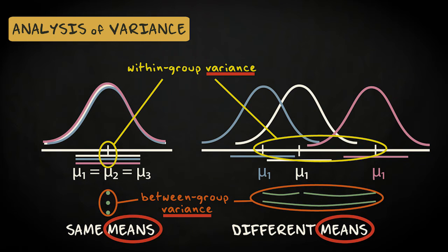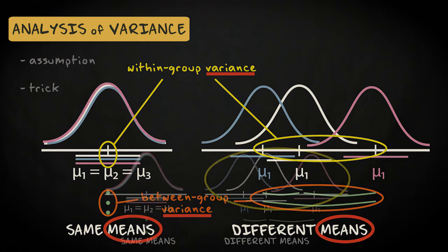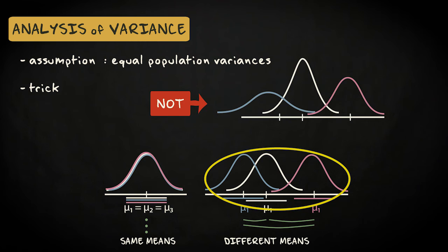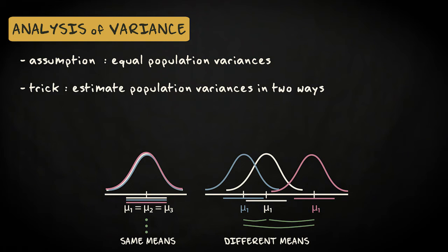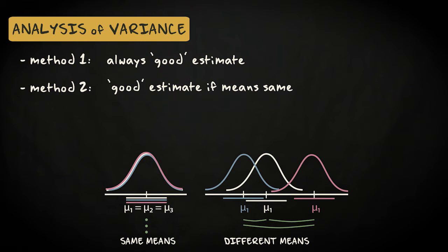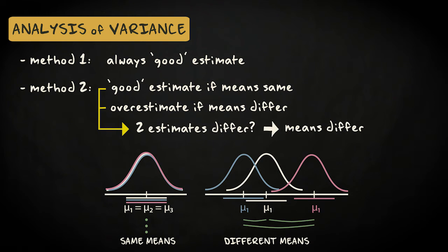How can variances tell us something about means? It works based on an assumption and a trick. First, we assume the variance is the same in all the populations — if there's any difference between the populations, this should be a difference in means only. The trick is to estimate the population variance in two different ways. The first method will always result in a fairly accurate and precise estimate of the population variance, whether the population means are different or the same. The second method will produce a fairly accurate estimate if the means are the same, but it will overestimate the population variance if the population means differ. So we can detect a difference in means by observing a discrepancy between the two estimates of population variance.